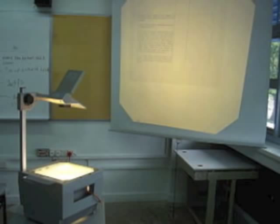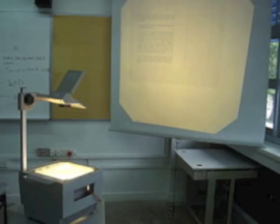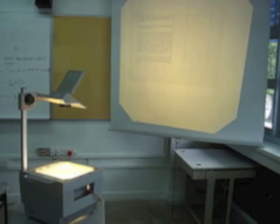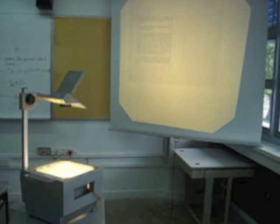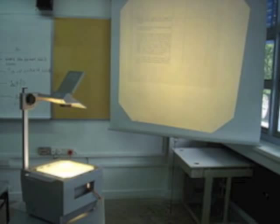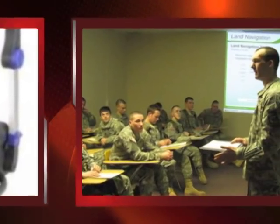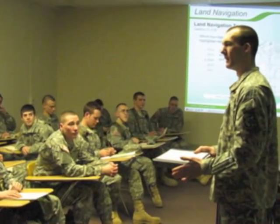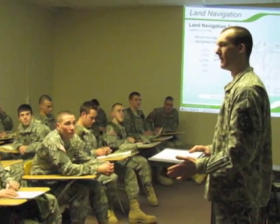The first overhead projector was used by the police force for identification work. It used a cellophane roll over a nine-inch stage, which allowed facial characteristics to be rolled across the stage. In 1945, the US Army used it for training. In the late 1950s and early 60s, it began to be widely used in schools and businesses.